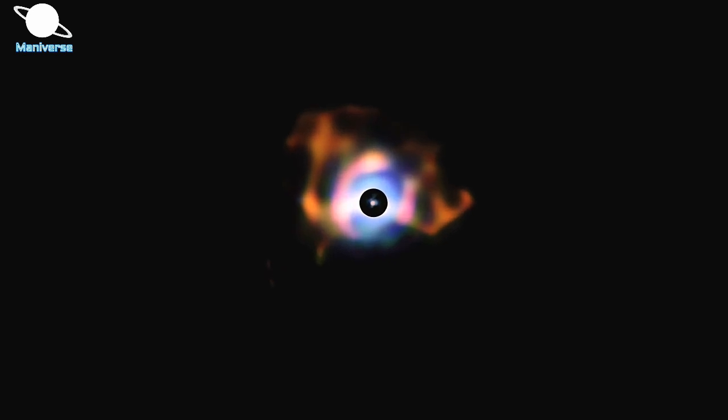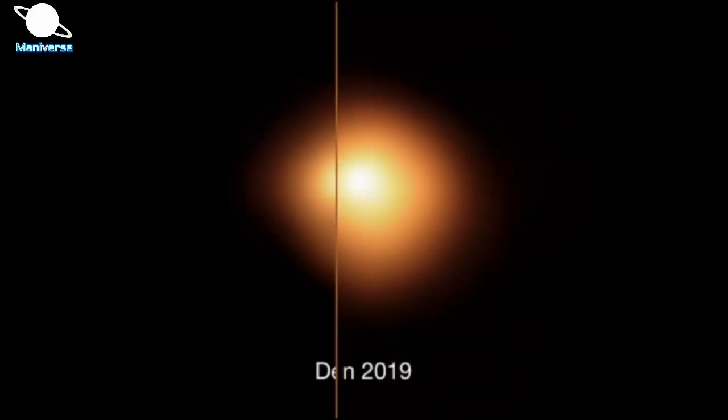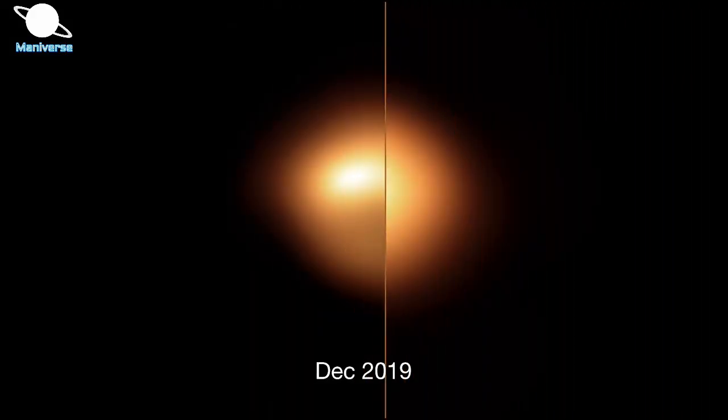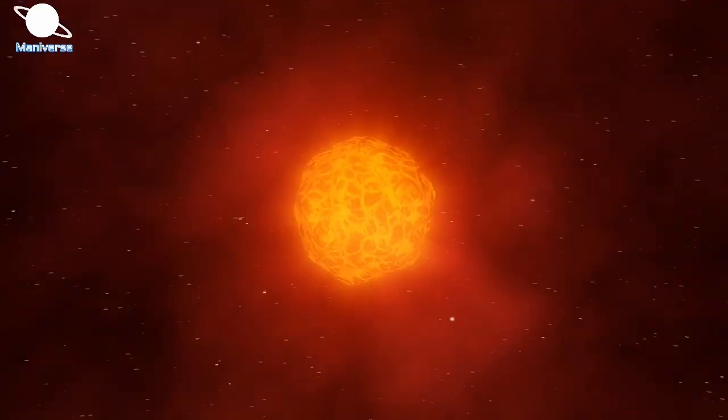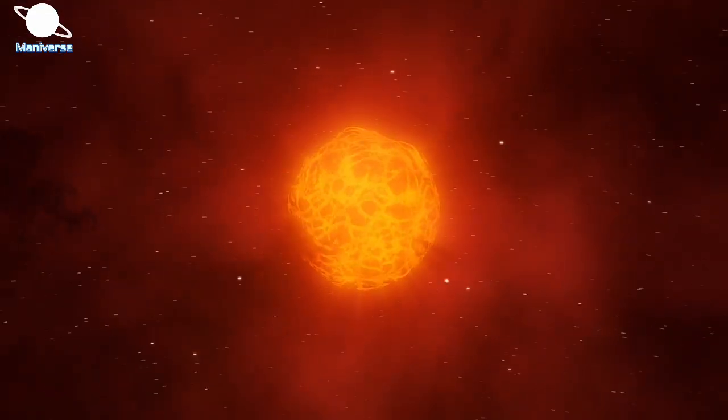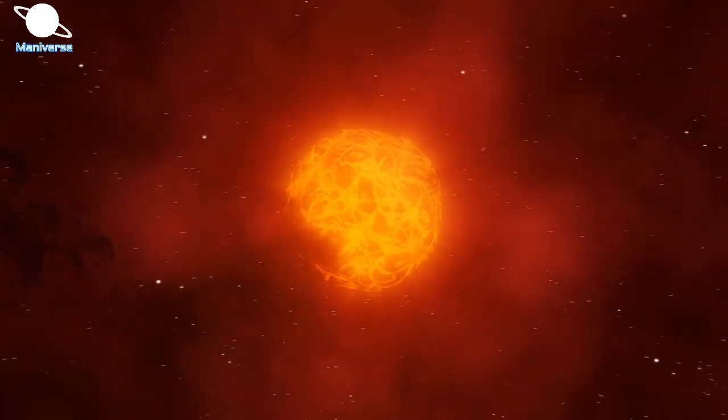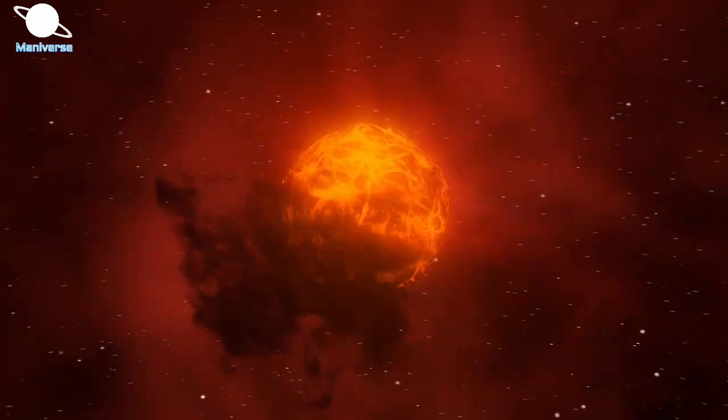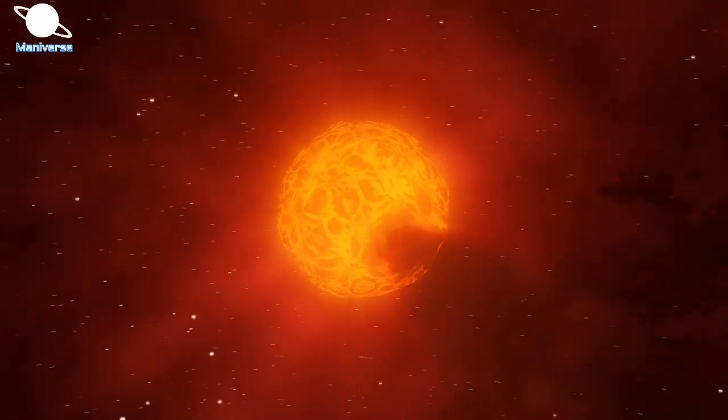Betelgeuse continues doing some very unusual things right now. The interior is sort of bouncing. Betelgeuse is thought to be recovering from its massive burp from within in 2019, when a bubble of gas from deep inside the star produced enough power to blast off a section of its surface, which became a dust cloud that caused the star to appear dim as seen from Earth.